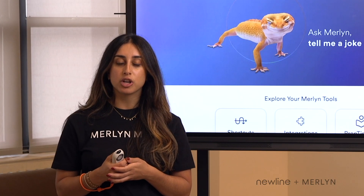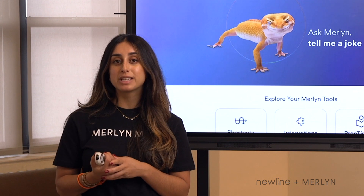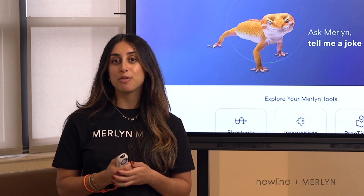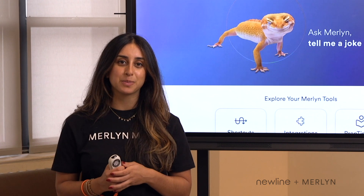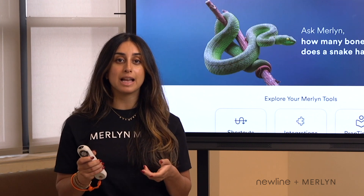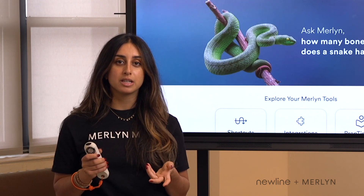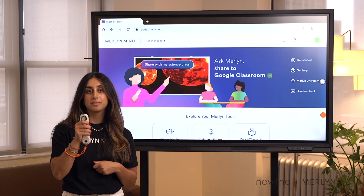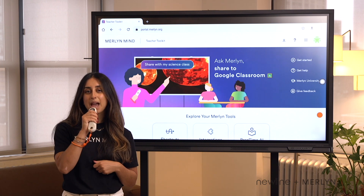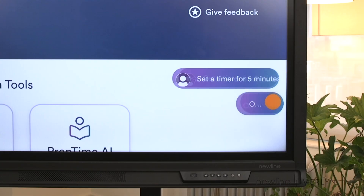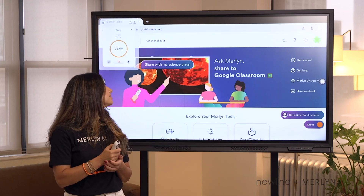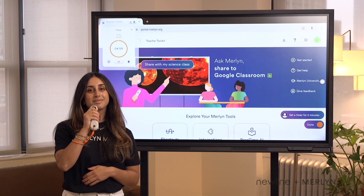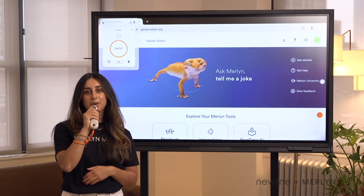During active instruction, your teachers can save time and keep the flow of class moving by using their voice to control their Newline panels. Let's start with a popular classroom feature: timers. Set a timer for five minutes. Close the timer.